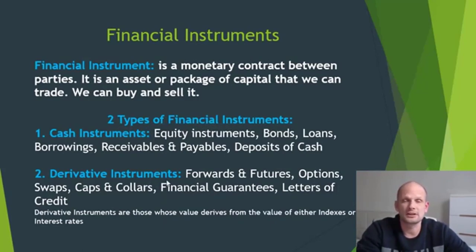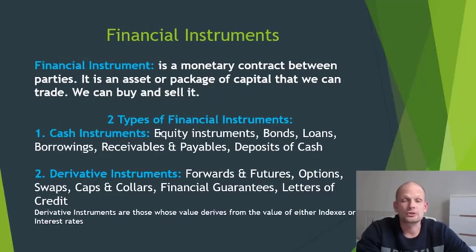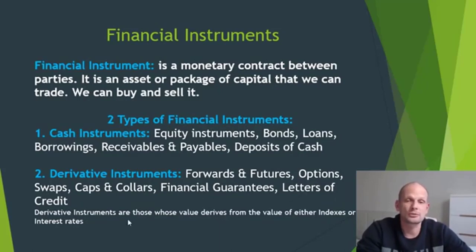The two types are cash instruments and derivative instruments. Cash instruments are equity instruments, bonds, loans, borrowings, receivables and payables, deposits, and cash. Some of you might be wondering where stocks are — stocks fall under equity instruments. Derivative instruments include forwards and futures, options, swaps, caps and collars, financial guarantees, and letters of credit. Derivative instruments are those whose value derives from the value of either indexes or interest rates.